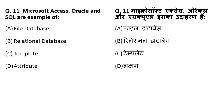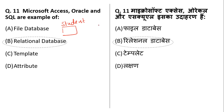Microsoft Access, Oracle, and SQL are examples of relational databases. A relational database is when tables are connected — for example, in a school database, student records and teacher records are linked together. All these connections are present in a relational database, and Oracle, Microsoft Access, and SQL are all examples of this.